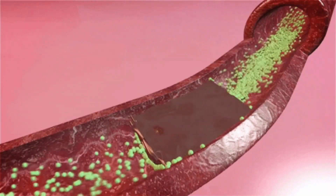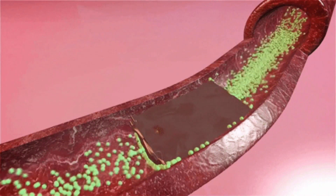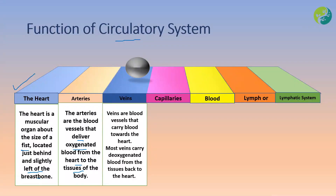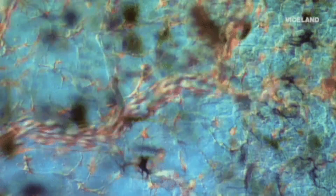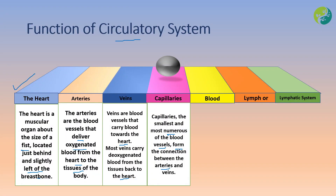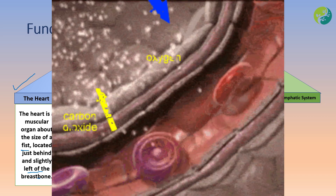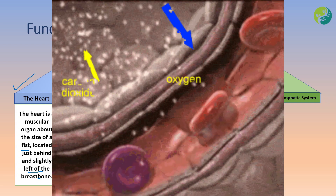Veins are also vessels that carry deoxygenated blood towards the heart. Most veins carry deoxygenated blood from the tissues back to the heart, and the pulmonary vein is the only vein that carries oxygenated blood. Capillaries are the smallest and most numerous blood vessels, forming the connection between the arteries and the veins. They are so narrow that blood can travel in a single file.